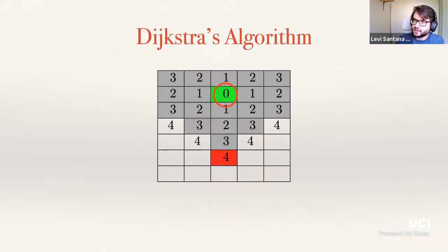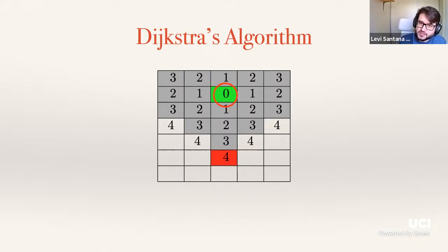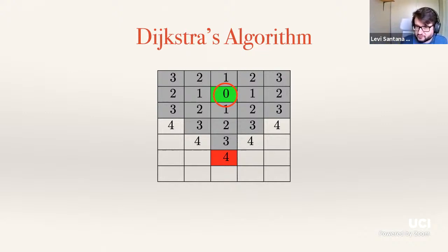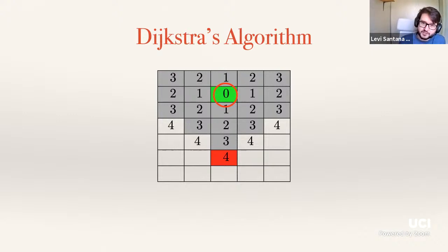In Dijkstra's algorithm, we look around the neighborhood where we start — the green cell. We apply actions, for instance moving right, and that costs one step. So we see the number one on the cell to the right of the green cell. Moving right again gets to the edge with cost two. These numbers tell you the cost of paths taken from the green cell to each specific cell. The red cell has cost four — that's the cheapest path, going straight down by applying down four times.